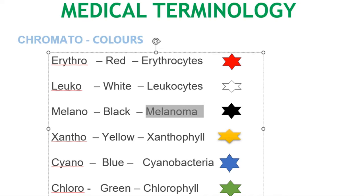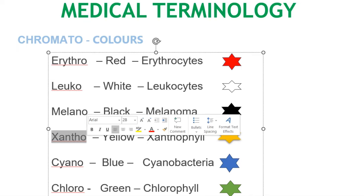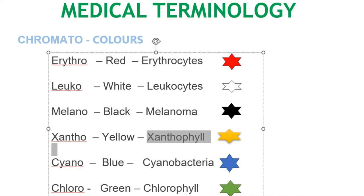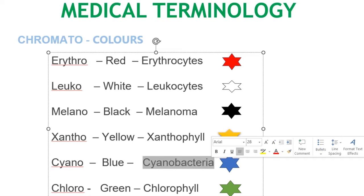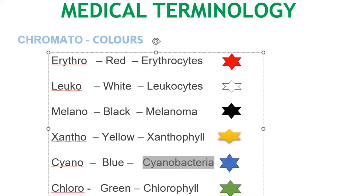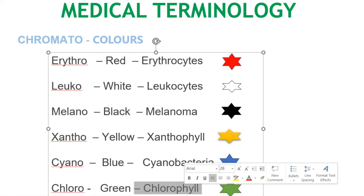Xantho refers to yellow carotenoid pigments — xanthophylls — which we can see in plants and animal tissues. Cyano means blue — cyanobacteria, also known as blue-green algae. Chloro relates to chlorophyll, the natural compound present in green plants.